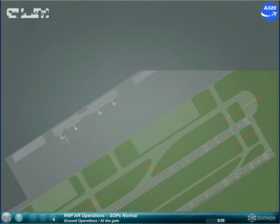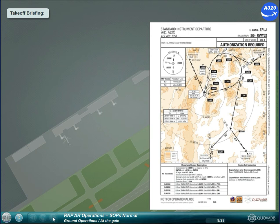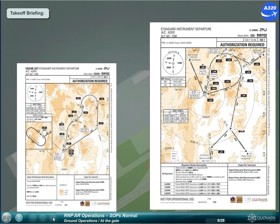In the take-off briefing, include specific items for RNPAR operation: RNP take-off minimum and RNP required accuracy. Location of the DP on chart and NDs. Engine failure before DP: engine out SID. Engine failure after DP: SID.